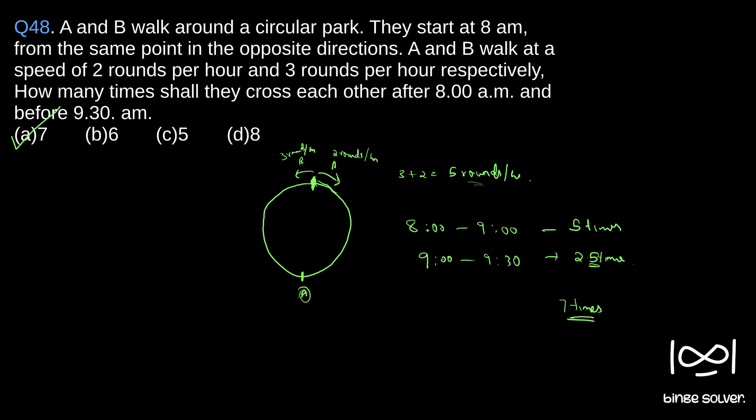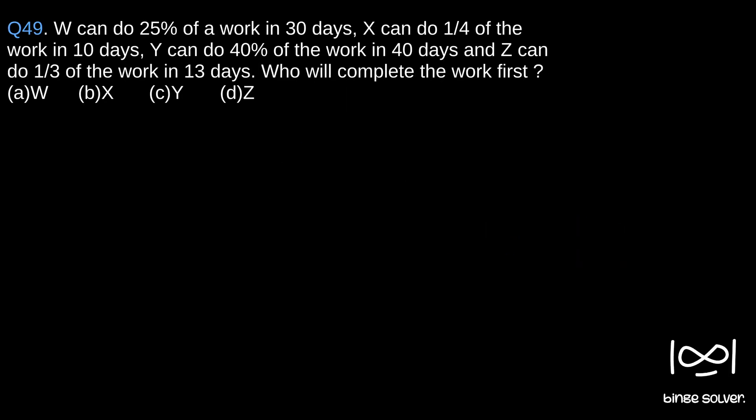Next question, question 49. W can do 25% of work in 30 days, X can do 1/4 of the work in 10 days, Y can do 40% of the work in 40 days, and Z can do 1/3 of the work in 13 days. Who will complete the work first? We are asked to compare the efficiency.